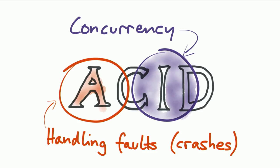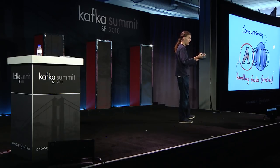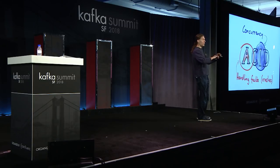The intuitive idea of atomicity is we want either all or nothing. That is, if a transaction writes a whole bunch of different things and then something goes wrong — something crashes — we want either that the transaction is rolled back and none of the writes take effect, everything disappears; or alternatively, if the transaction commits successfully, then we want all of the writes made by that transaction to become durable. So atomicity means: even in the face of crashes, we have either all of the changes taking effect, or none of them.